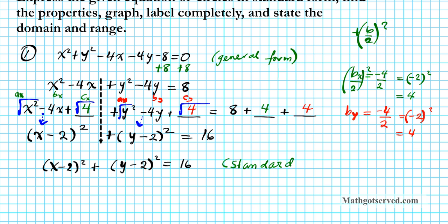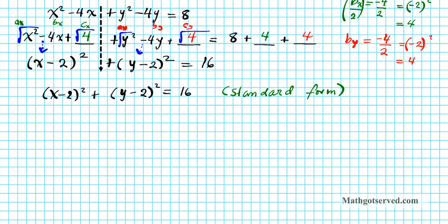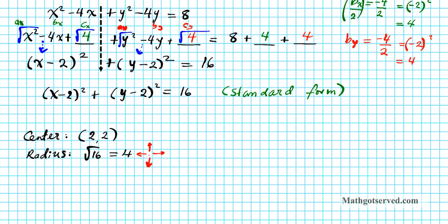The beauty of standard form is that it's easy to determine the center and radius, which enables us to graph. To find the center, take the opposite of the numbers next to each variable: negative 2 becomes 2 and negative 2 becomes 2, so the center is (2, 2). To get the radius, take the square root of 16, which is 4. That means we go 4 units in all directions — right, left, up, and down from the center.